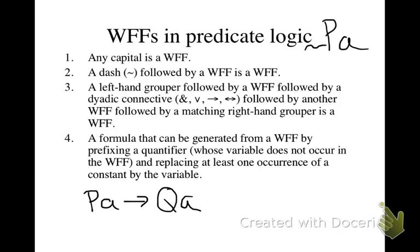'Not PA' will be a well-formed formula. Let's focus on the formula 'if PA, then QA' — this is a well-formed formula, and what we can do is prefix a quantifier on that, say 'for all X.' This is a quantifier whose variable does not occur in the well-formed formula. Then we replace at least one occurrence of a constant by the variable — so if we replace the A with an X, that would be a well-formed formula.